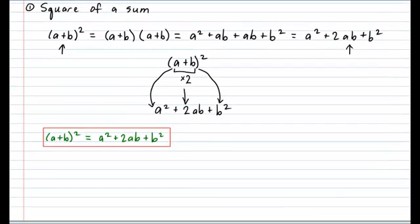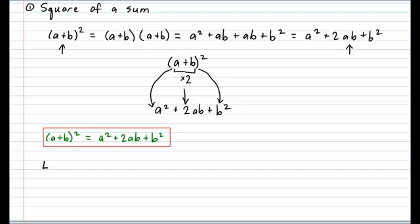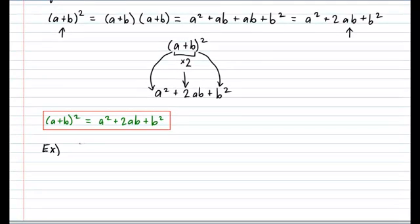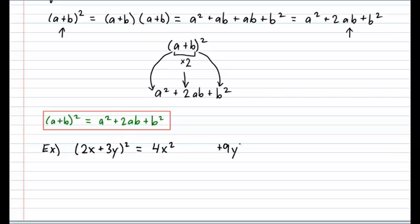Let's try some examples to see this identity in action. Let's start with a nice easy one: (2x + 3y)². Applying the identity — take the first term 2x and square it: that gives 4x squared. Take the second term 3y and square it: that gives 9y squared. I skipped a bit of space in the middle for the middle term, which comes from doing 2x times 3y times 2, giving plus 12xy. I left the space in the middle to remind myself to fill it in with the middle term.